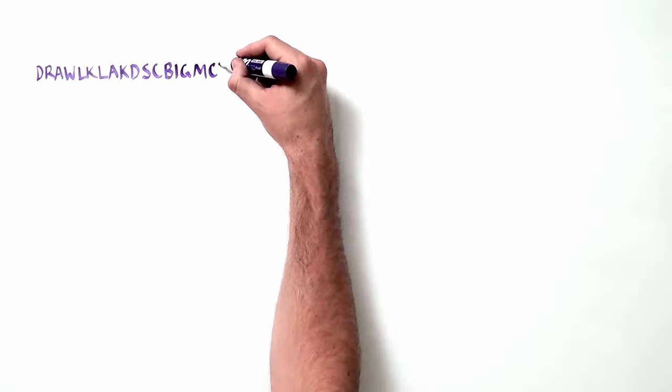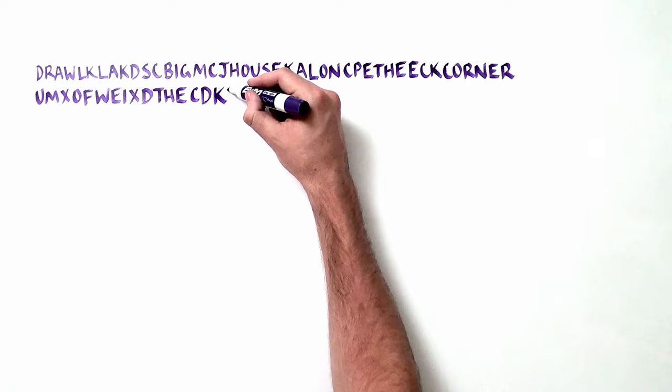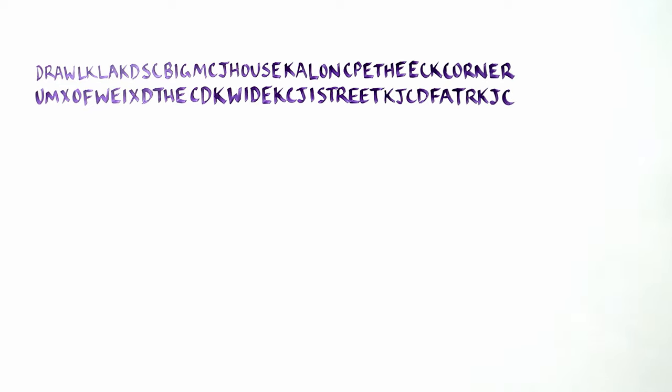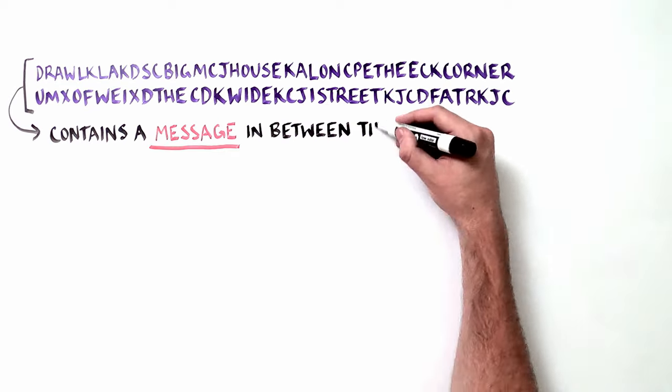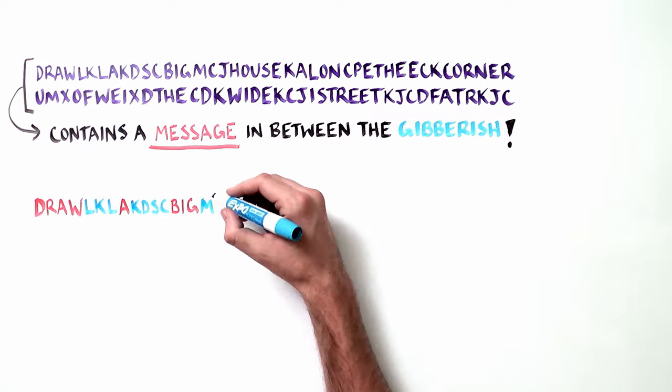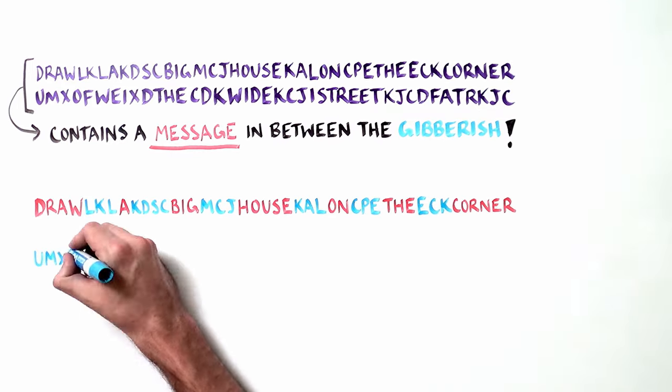Let's say a gene's full sequence looks like this. There is a message in there, but it's hard to see because there are a lot of other gibberish letters in between the words. The gibberish must be removed to make the message readable.